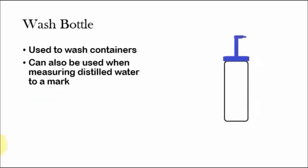And then wash bottles are used to wash containers. They can also be used when measuring distilled water to a mark. You always put distilled water in a wash bottle, you don't put regular water. That's a very generic rule in most labs. And because they don't squirt out that much water, they squirt out just little amounts of water, that's why you can use them to measure out very specific amounts of distilled water whenever you're trying to measure out some quantity of water in a burette or a round bottom flask or whatever the case may be.